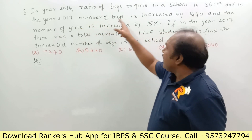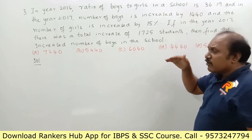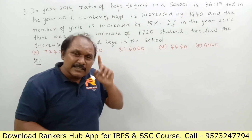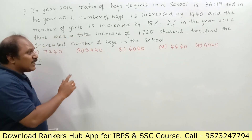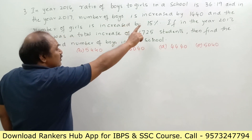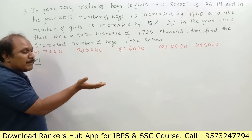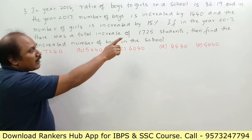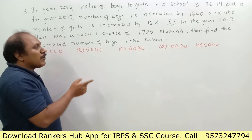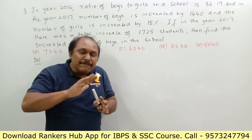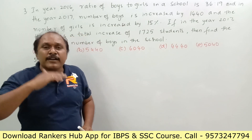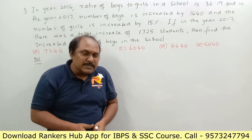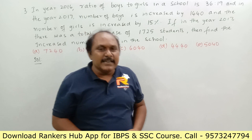What do we mean by the increased number of boys? We want to know how many boys were there in the school in the year 2017 — don't get confused. 1440 is the number of boys who were added (the difference), but 'find the increased number of boys' means: after increasing by 1440, what is the new total number of boys? That is the question.